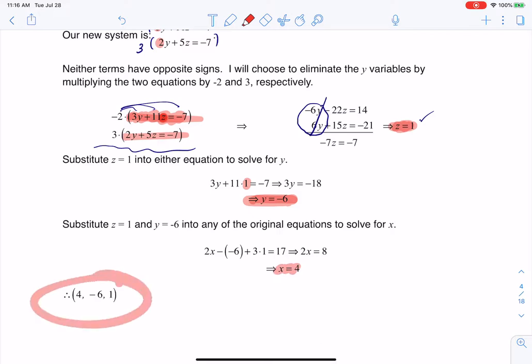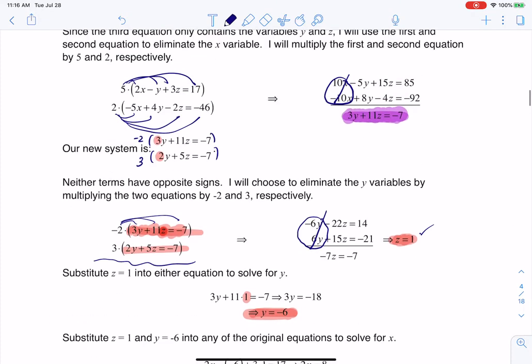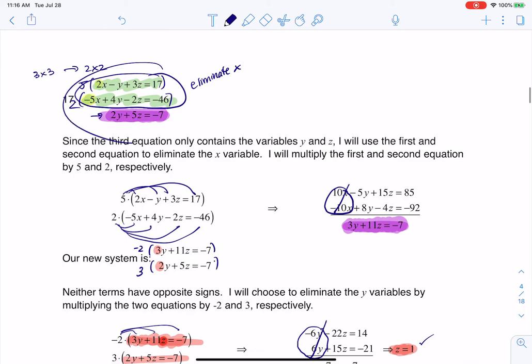There's my ordered triple. I can't recommend enough: check your answers. If this is x, y, and z, plug those numbers - 4, negative 6, and 1 - back into your original equations and see if equality holds. If it does, you've got the right answer. If it doesn't, you made a typo somewhere.